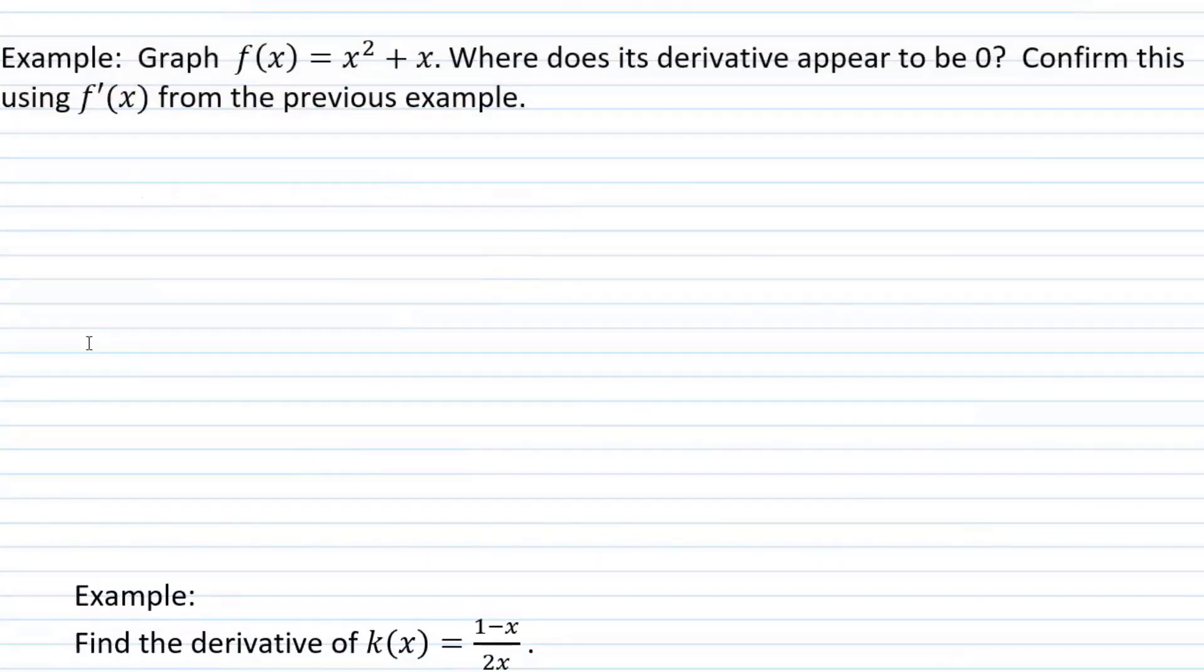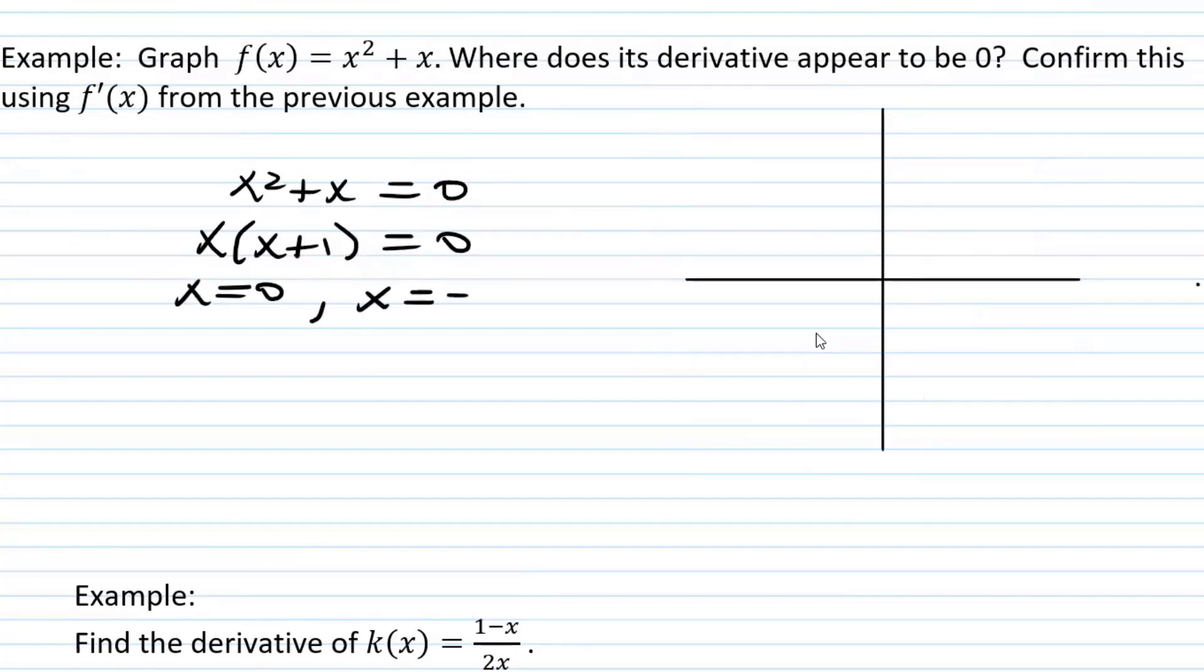f of x equals x squared plus x. That's a parabola. One way to graph it would be to find its x intercepts and then look in between, because in between we should have our vertex because of the symmetry of a parabola. Or you could use other graphing techniques that you've learned in the past. I'm going to go ahead and draw a little graph over here. I know that x squared plus x equals zero when x is zero or negative one. So we have an x intercept at zero and we have an x intercept at negative one.